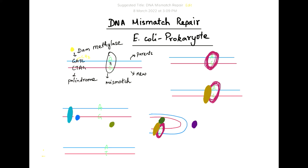And now the mismatch is recognized by the binding of MUT-S protein as it scans the DNA strand, the new strand, for any mismatch. So it has identified the A-G mismatch, and that will activate the binding of MUT-L protein.